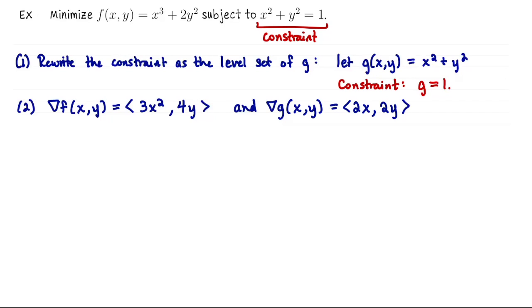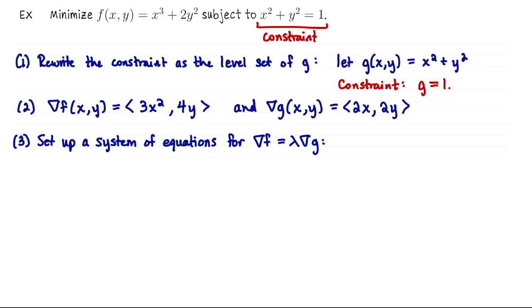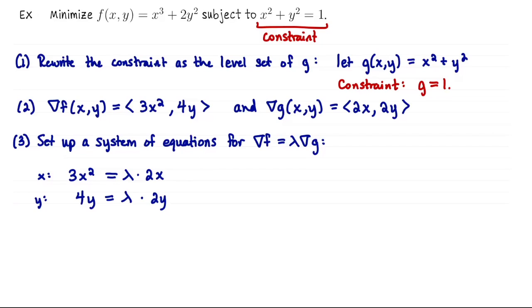The third step is to set up a system of equations that x, y, and lambda must satisfy so that the gradient of f equals lambda times the gradient of g. Matching x-coordinates: 3x squared equals lambda times 2x. Matching y-coordinates: 4y equals lambda times 2y. This is two equations for three unknowns — x, y, and lambda — so we always append the constraint equation: x squared plus y squared equals 1.